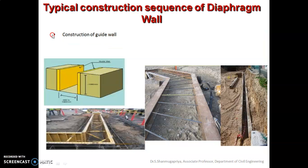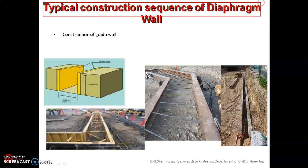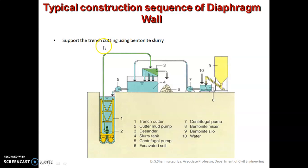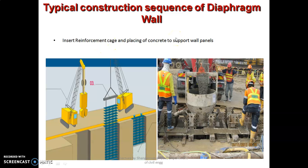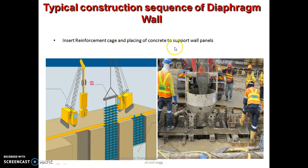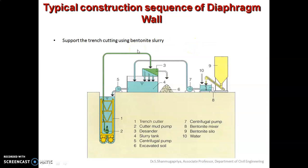Now let us understand the typical construction sequence involved in the construction of the diaphragm wall. The first step is the construction of the guide walls. The second step is excavation to form the diaphragm wall trenches. The third step is supporting the trench cutting using bentonite slurry. The fourth step is inserting the reinforcement cages and placing the concrete to support the wall panels.